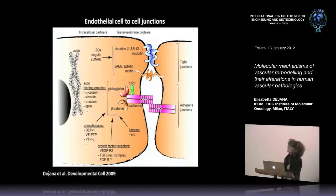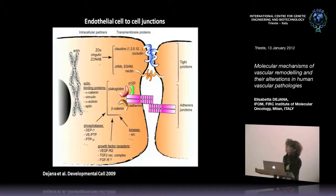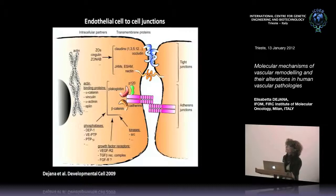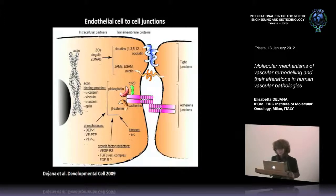Moving to adherent junctions, the molecular components are totally different from tight junctions. Adhesion is promoted by cadherins, transmembrane proteins mediating homotypic adhesion, linked inside the cells to specific partners including beta-catenin, plakoglobin, and P120. These mediate anchorage to actin and are important for cell signaling. All three — P120, plakoglobin, and beta-catenin — when not recruited at the membrane, can translocate to the nucleus and modulate cell transcription. Other signaling proteins including kinases like Src, phosphatases, and growth factor receptors can also be recruited at the adherent junction.